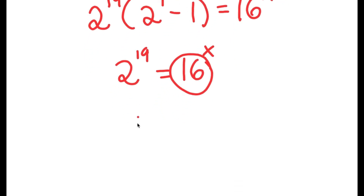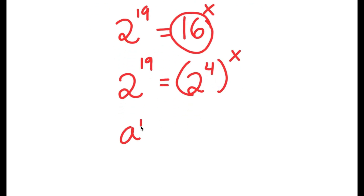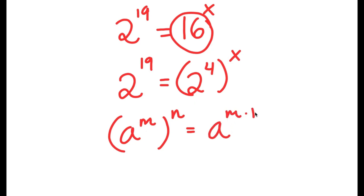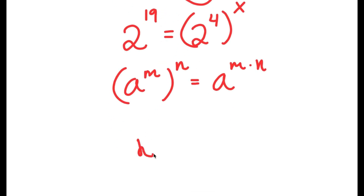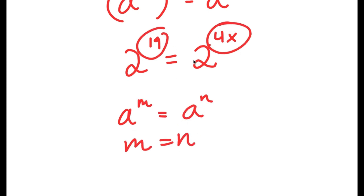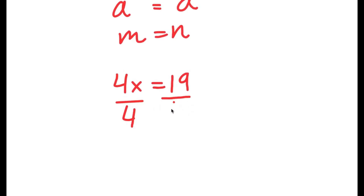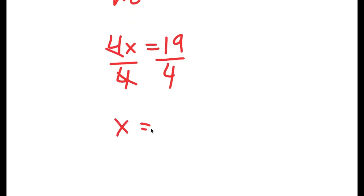Now, 16 is the same thing as 2 to the power of 4. So I have 2 to the power of 19 equals 2 to the power of 4 to the power of x. Using the rule a to the power of m to the power of n equals a to the power of m times n, I get 2 to the power of 4x. Since a to the power of m equals a to the power of n means m equals n, I get 19 equals 4x. Dividing both sides by 4, x is equal to 19 over 4.